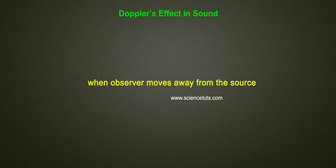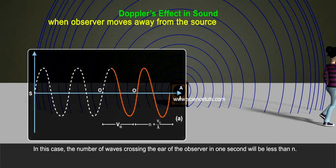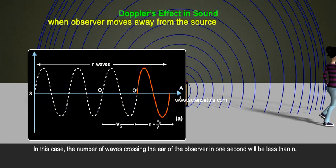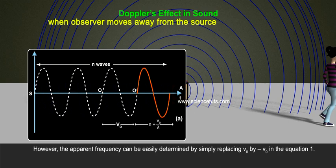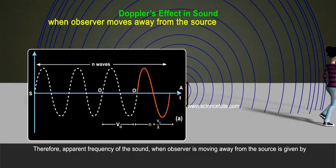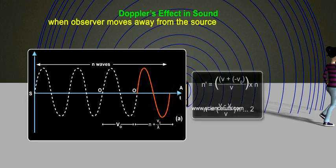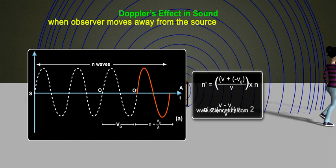When observer moves away from the source. In this case, the number of waves crossing the year of the observer in one second will be less than n. However, the apparent frequency can be easily determined by simply replacing v0 by minus v0 in the equation 1. Therefore, apparent frequency of the sound when observer is moving away from the source is given by n' equals to v plus minus v0 by v into n. n' equals to v minus v0 by v into n. Equation 2.